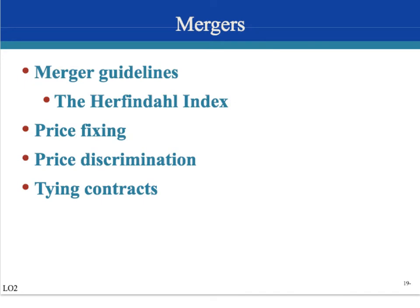With tying contracts, the government will usually prosecute firms because tying contracts increase market power and decrease competitiveness. For example, Kodak was not allowed to require that their customers process their film only through Kodak facilities. They were trying to say you can buy Kodak film, but you can only process it through a Kodak facility. The government said that was unethical and did not allow it.